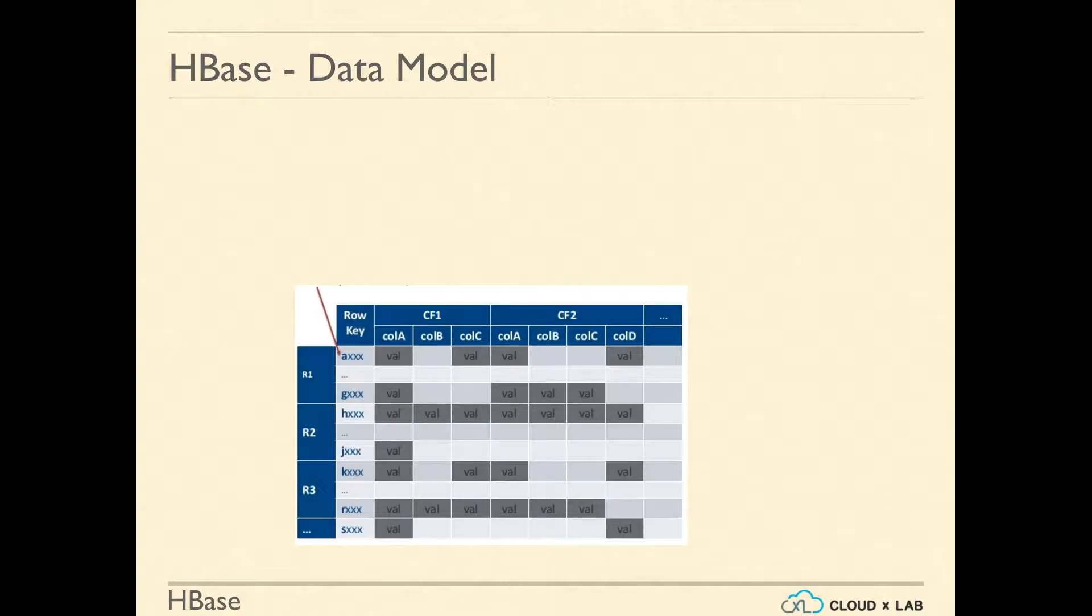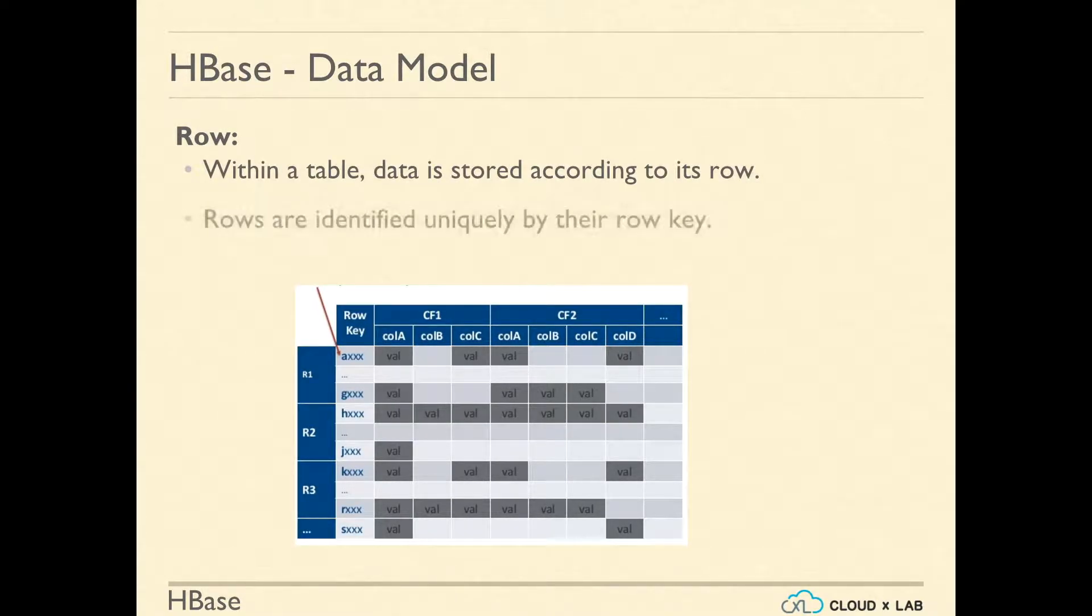Within a table, data is stored according to its row. Rows are identified uniquely by their row key. Row keys do not have a data type and are treated as byte array.